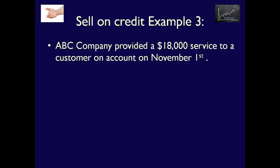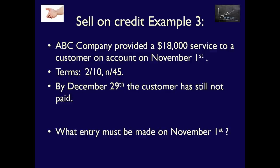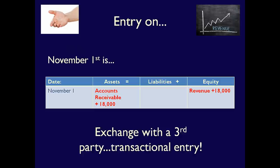Let's do one final example to show exactly what the cost of selling on credit is. On November 1, 2014, ABC Company sells services for $18,000 to a customer on account, with terms of 2/10 net 45. This means if the customer pays within 10 days, they receive a 2% discount and only pay 98% of their bill. If they pay after 10 days but before 45 days, they pay 100%. The entry on November 1: we gave away a service, so revenues increase by $18,000, and accounts receivable increases by $18,000.